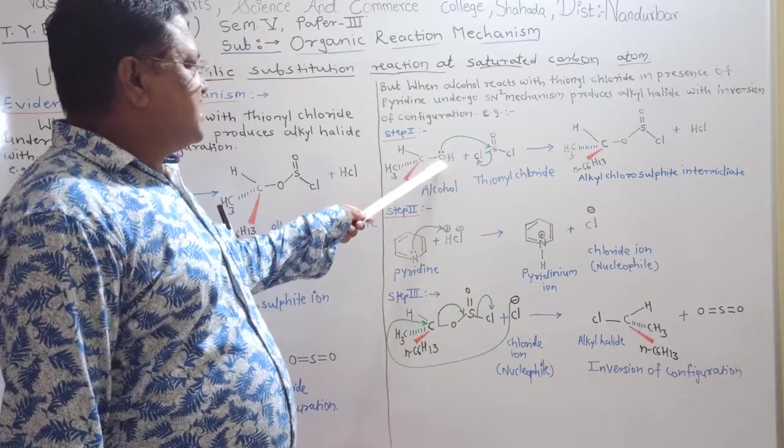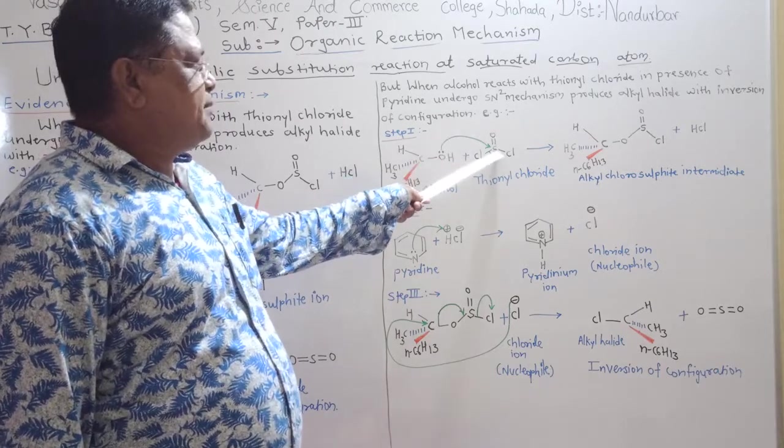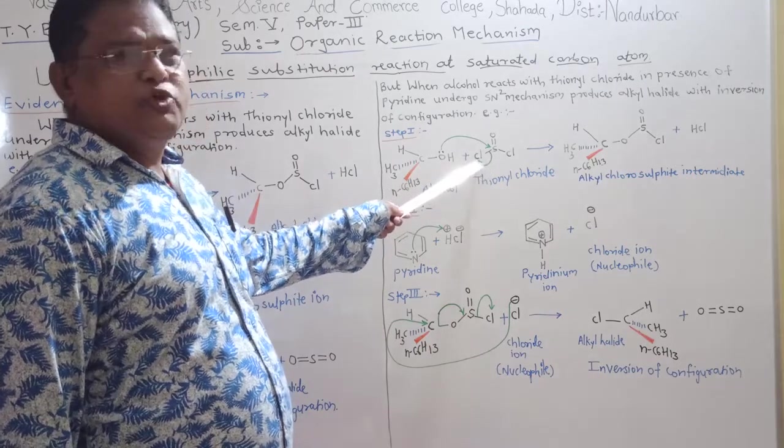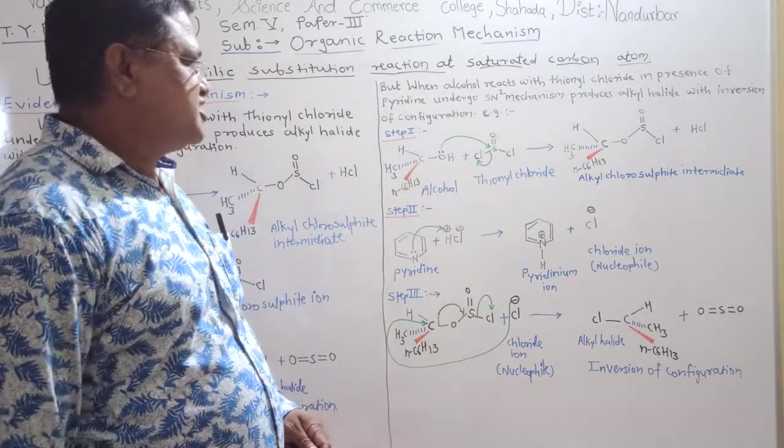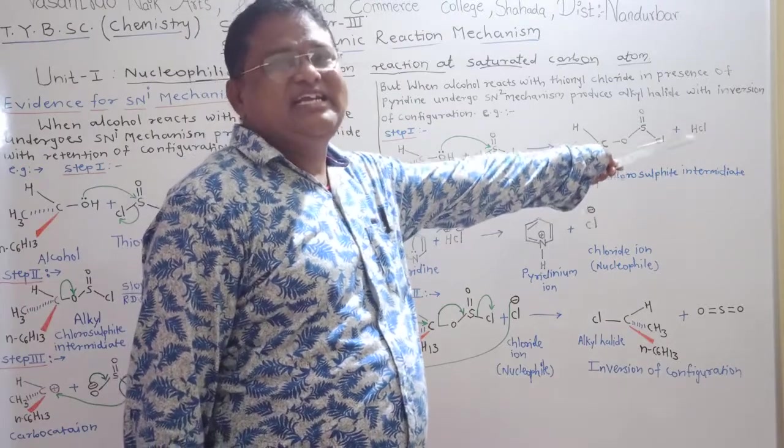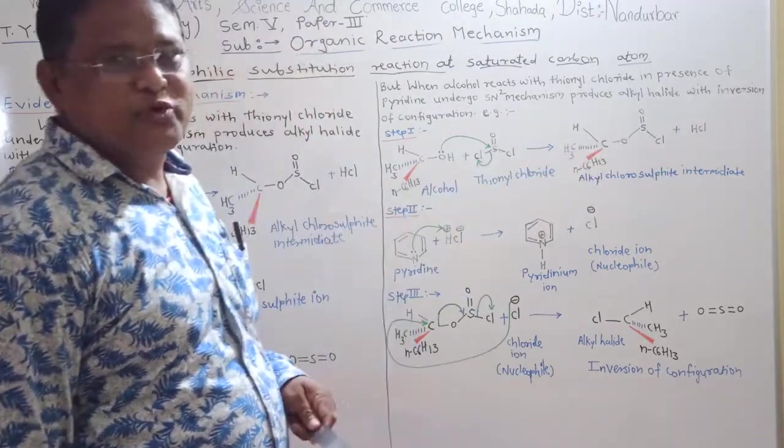here, electron pair of oxygen attacks on electron deficient sulfur metal and chlorine loses its position along with the bond to form alkyl chlorosulphite as an intermediate and HCl as a product.